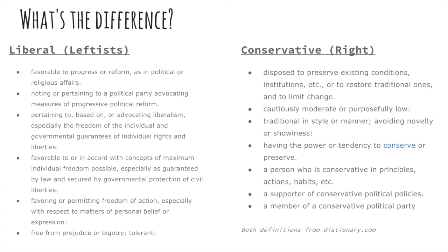A Democrat is usually someone who is liberal in their thinking or they have left-leaning policies. If you are liberal or if you support a liberal party, it means that you're in favor of progress or reform, especially when it comes to political or religious affairs. You support a progressive political party — you're always seeking out or trying to make change. You are advocating liberalism, meaning you advocate the freedom of the individual in government to guarantee individual rights and liberties, maximum individual freedoms, government protection, and civil liberties, favoring freedom in action, personal beliefs, and expression.